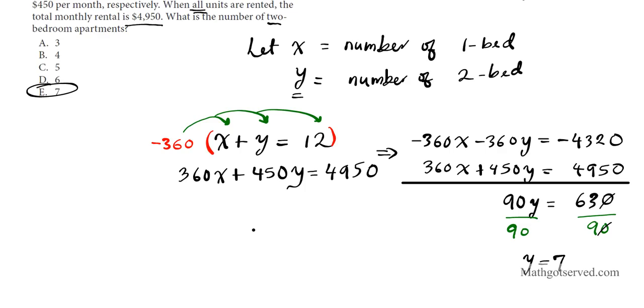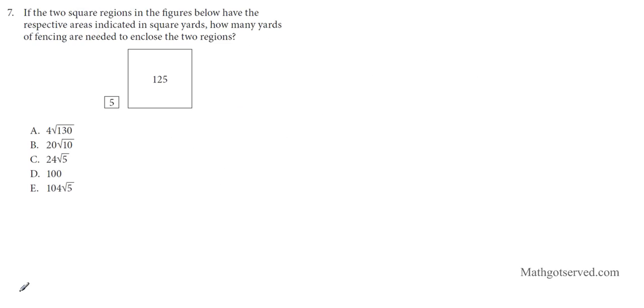It says if the two squares in the figure below have respective areas indicated, how many yards of fencing are needed to enclose the two regions? Remember what the area of a square is. The area of a square is basically S squared because we know that the sides are congruent. So what is S in each case?